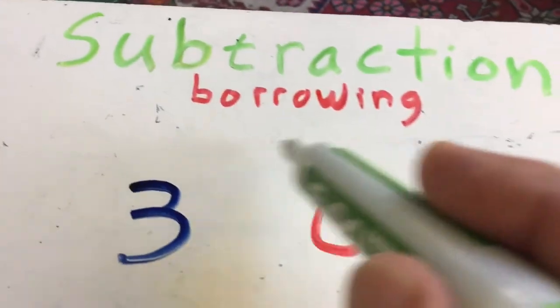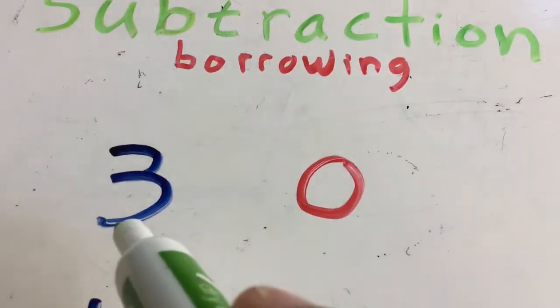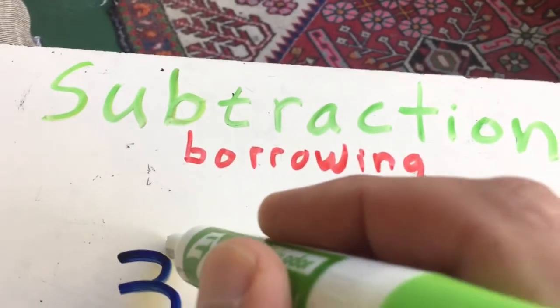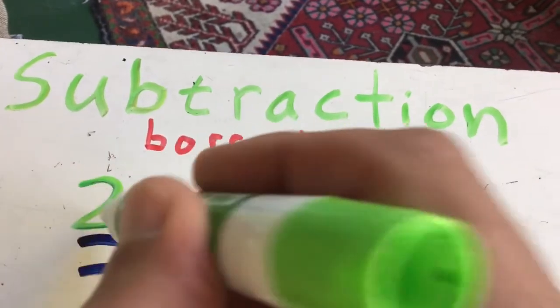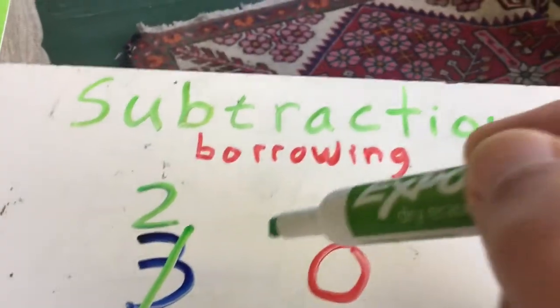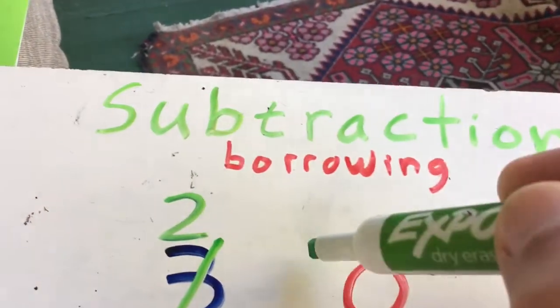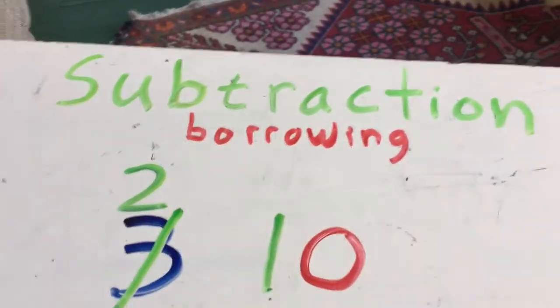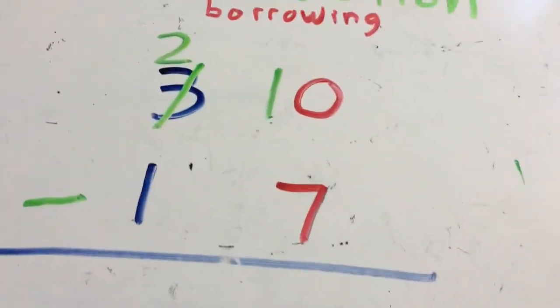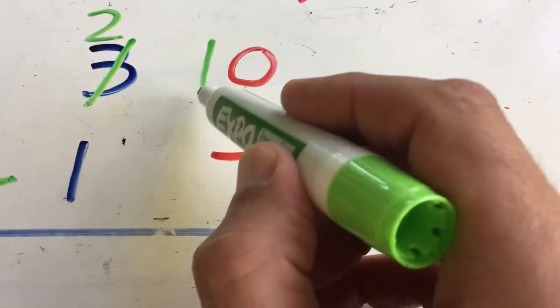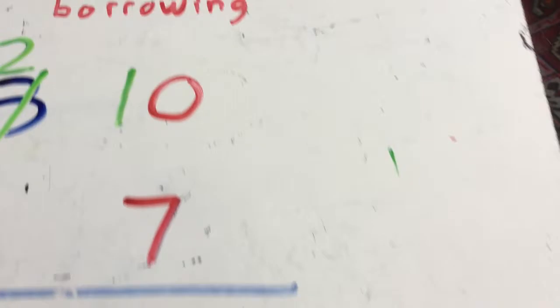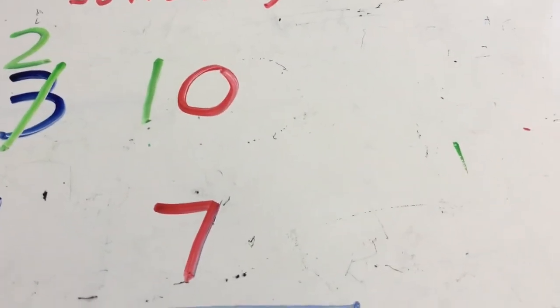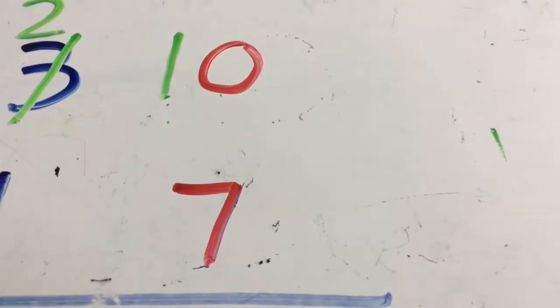I know I have to borrow from my neighbor next door to the tens place. So I take a group of tens out. That makes this a two. The next thing I do is add that ten number, the one that makes it a ten, next door. Since I had a zero, the one I add makes it a ten. Then I try again. Bottom to the top. Can I take seven away from ten now? Yes, ten is bigger than seven. I get three left.